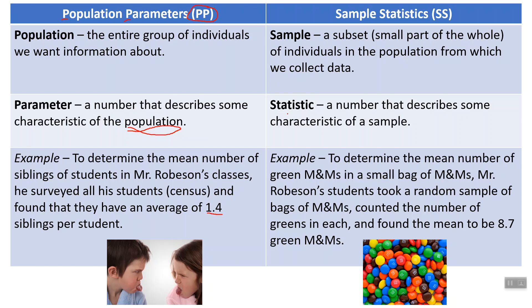Sample statistics — S and S go together. For example, to determine the mean number of green M&Ms in a small bag of M&Ms, Mr. Robeson's students took a random sample of bags of M&Ms, counted the number of green M&Ms, and found the mean to be 8.7 green M&Ms per bag. This was a sample because we didn't look at all possible bags of M&Ms — that would take way too long. So we just looked at a couple bags, and that makes it a sample.